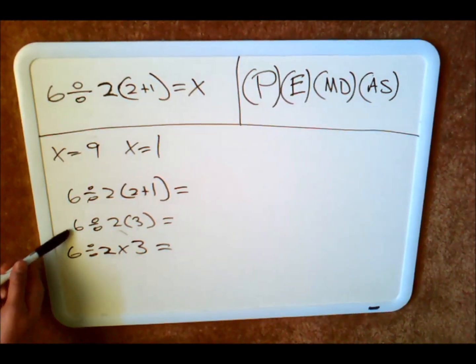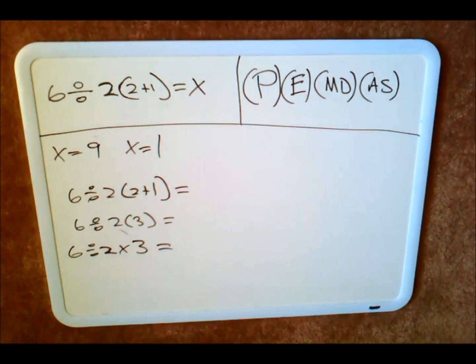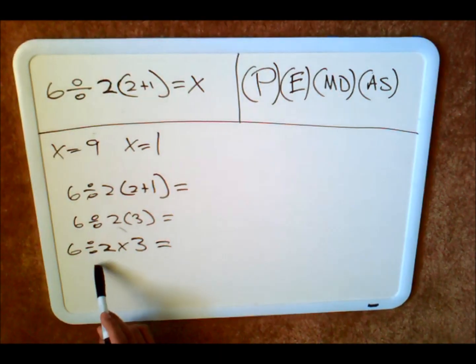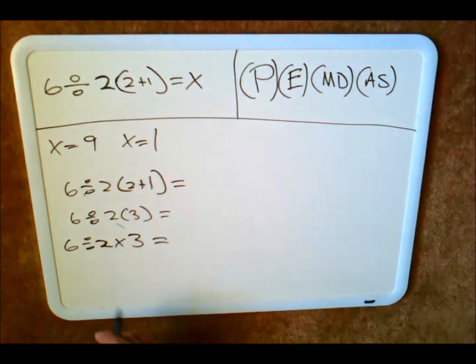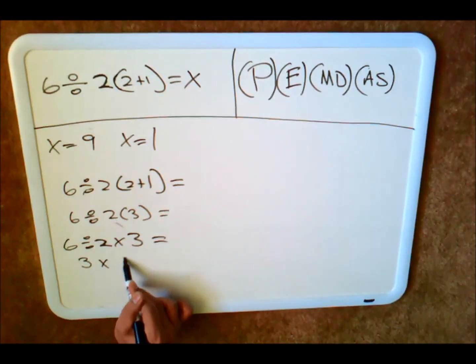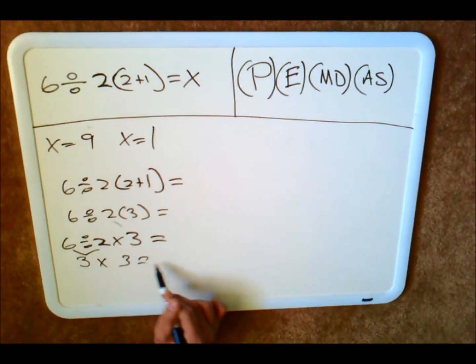So if you write it like this, which is the exact same problem as this, I'm sure no one will disagree with you. Because using the order of operations, you then would do 6 divided by 2, then times 3, which again would be 3 times 3. Let me bring this down and that will be 9.